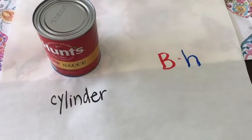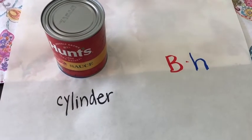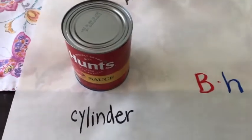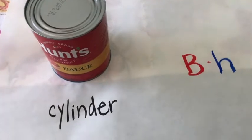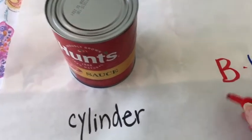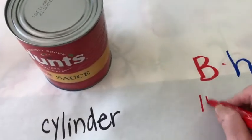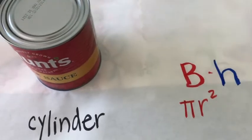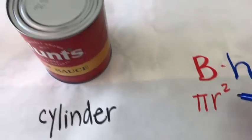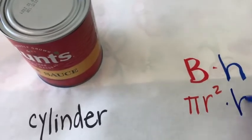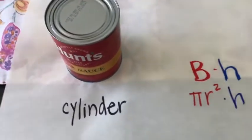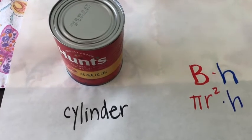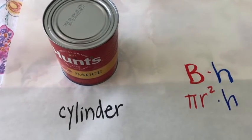Looking at a cylinder, we can do the same thing. We know the formula for the area of a circle is pi r squared, so the specific formula for the volume of a cylinder is pi r squared times h.